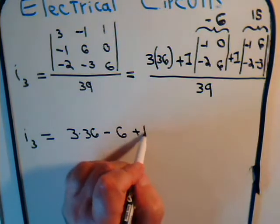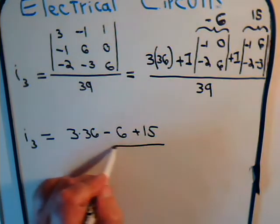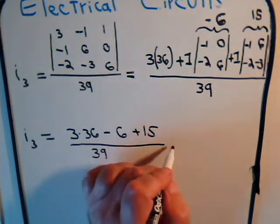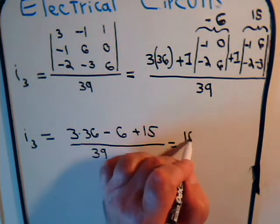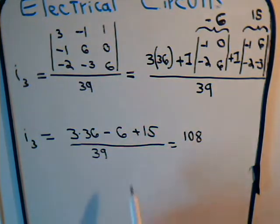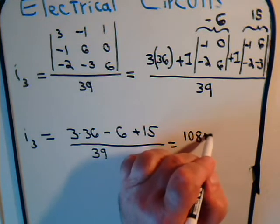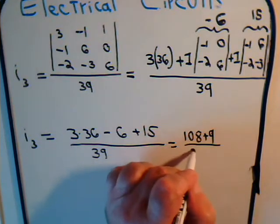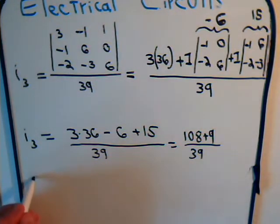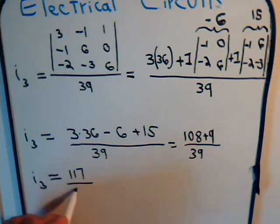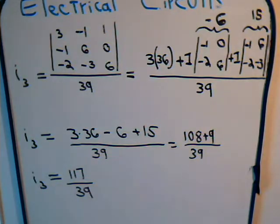Here we have 3 times 36 minus 6 plus 1 times 15 divided by 39. And 3 times 36, that is 108 minus 6 plus 15 is plus 9 divided by 39.